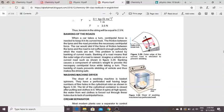Banking of roads: When a car takes a turn, centripetal force is needed to keep it in its curved track. The friction between tires and road provides the centripetal force. The car will skid if the friction force between tires and road is not sufficient.